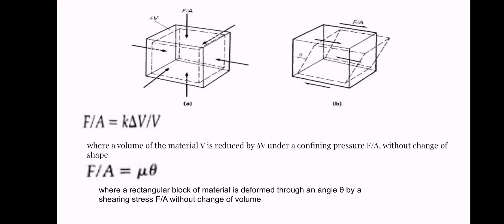Uniform confining pressure F/A produces a decrease in volume ΔV, which is related to the coefficient of incompressibility of rock. A shearing stress F/A produces θ without accompanying change of volume. F/A = K(ΔV/V), where a volume of the material V is reduced by ΔV under a confining pressure F/A without change of shape.